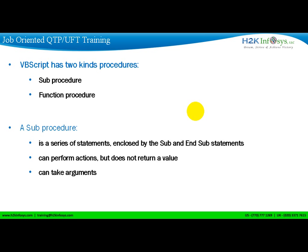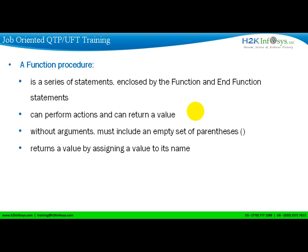VBScript has two kinds of procedures: sub procedure and function procedure. A sub procedure is basically a series of statements enclosed by Sub and End Sub. It performs a certain task but does not return any value. A function is also a series of statements enclosed between Function and End Function, and it also performs a task but it returns a value.